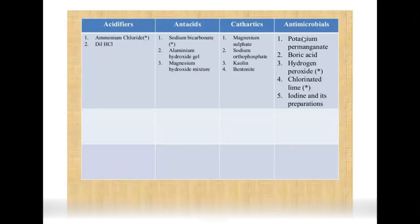Acidifiers commonly used are ammonium chloride and diluted HCl. Antacids neutralize excess acid and act as buffering agents — examples include sodium bicarbonate, aluminum hydroxide, and magnesium hydroxide mixture. Cathartics include magnesium sulfate, sodium orthophosphate, and choline bentonite. Antimicrobials include potassium permanganate, boric acid, hydrogen peroxide, chlorinated lime, and iodine preparations.